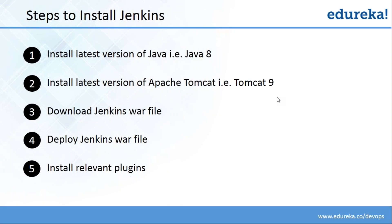There are 5 steps to install Jenkins. First, we need to install the latest version of Java, that is Java 8. Once Java is installed, we need to install the latest version of Apache Tomcat, that is Tomcat 9. If you have a version of Java older than Java 8, it won't be compatible with Apache Tomcat 9. So you need to install Java 8 or a version released after Java 8.